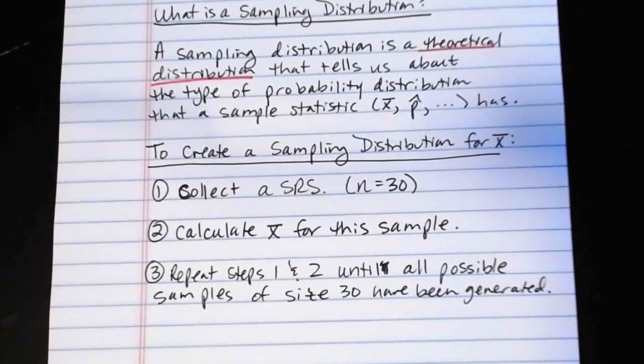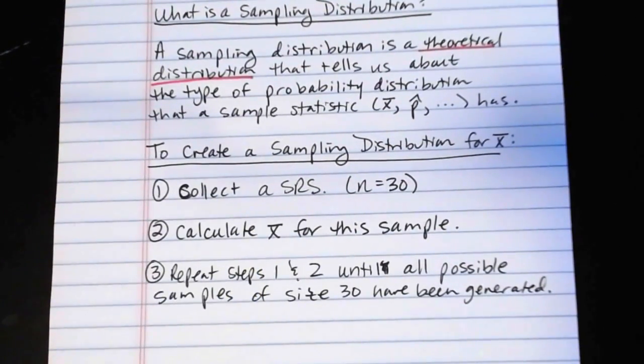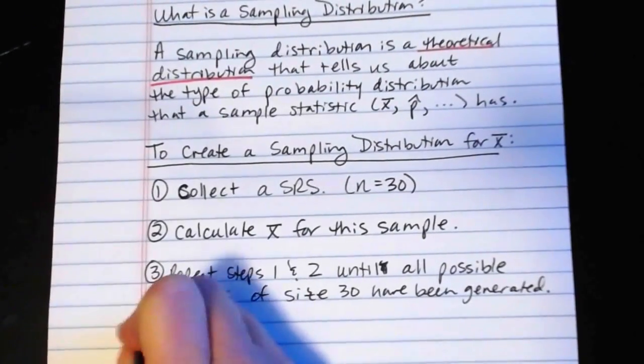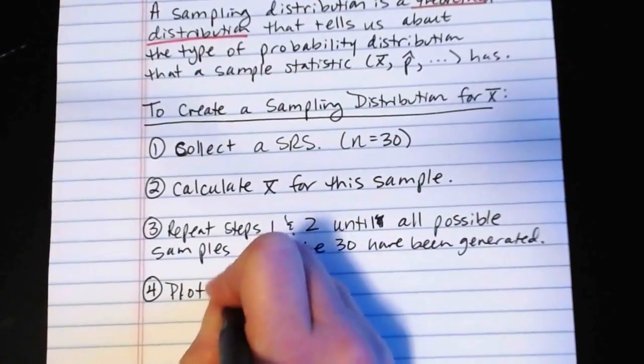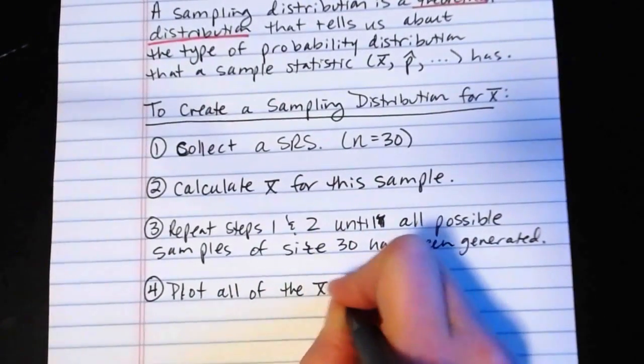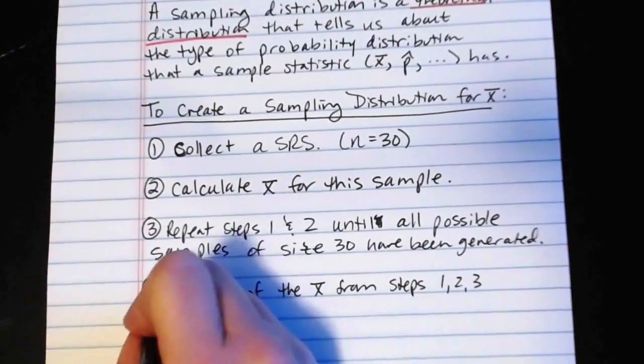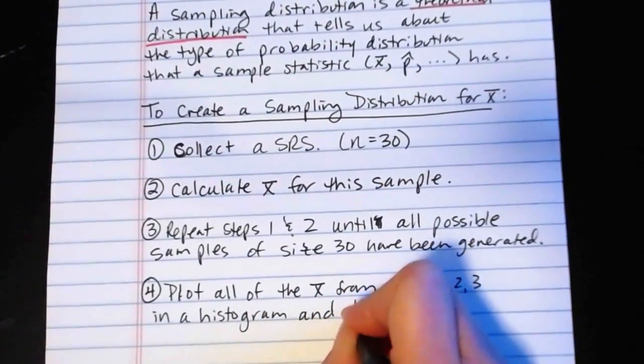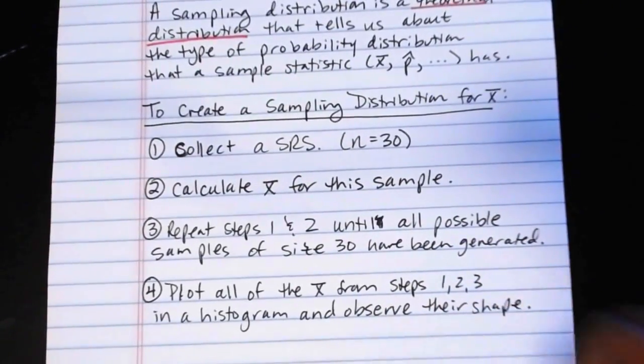This, by the way, is why we don't actually create these in practice. If I were going to do this for a large enough population, I would have to repeat those steps over and over again until I had made all possible samples of size 30 from my larger population. And then four, we plot all of the x bars from steps one, two, and three in a histogram and observe their shape.